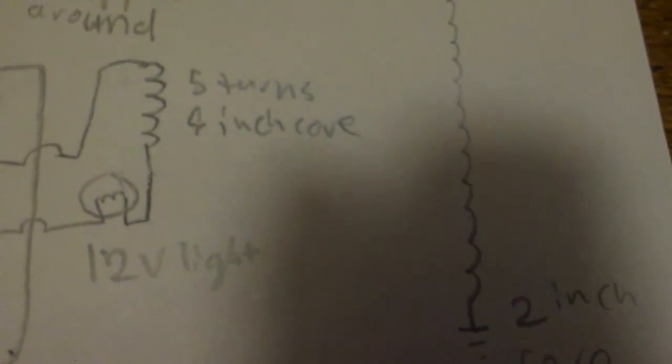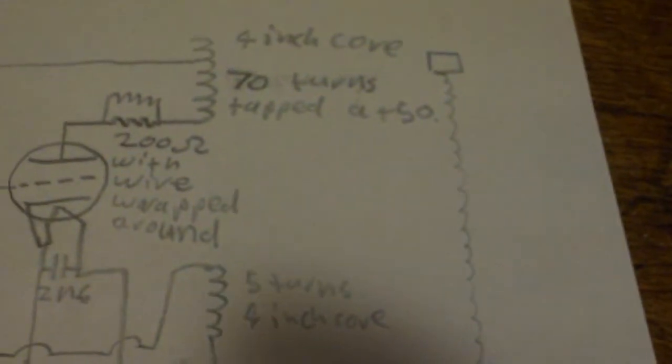The secondary coil is a 2-inch form with a thousand turns on it. That's basically the whole circuit.